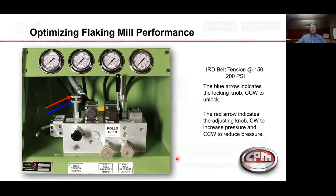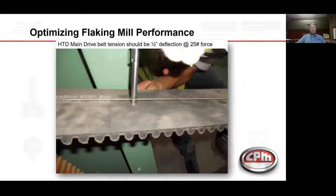This is the hydraulic control console. This pressure-reducing valve adjusts the inner roll drive belt tension, which is displayed on the leftmost gauge. Then we have left and right roll pressure, controlled by these pressure-reducing valves, and the feed gate pressure. For the main drive belt, we need to check for a half-inch deflection at 25 pounds of force, measuring the long span of the belt and checking deflection at the center.